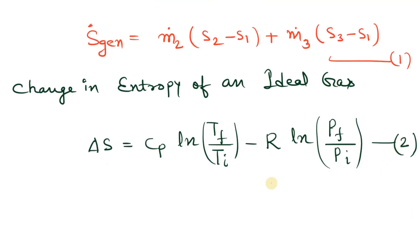Generated entropy equals m2_dot times delta s, that is S2 minus S1. Let's write S2 minus S1 as Cp ln(T2/T1) minus R ln(P2/P1).